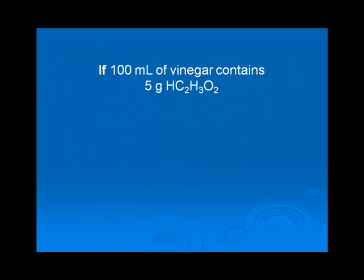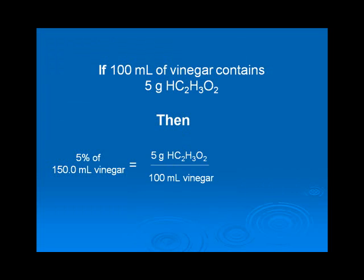If 100 mL of vinegar contains 5 grams of acetic acid, then 5% of 150.0 mL of vinegar equals 5 grams of acetic acid divided by 100 mL of vinegar times 150.0 mL of vinegar, which equals 7.500 grams of acetic acid.